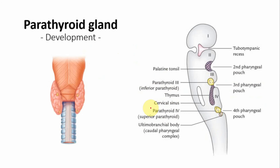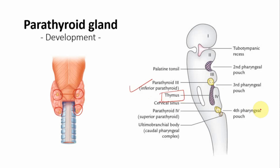For the parathyroid gland: there are two superior and two inferior parathyroid glands on the posterior borders of the thyroid gland. The inferior parathyroid arises along with the thymus from the third pharyngeal pouch, while the superior parathyroid is from the fourth pharyngeal pouch. The germ layer is endoderm.